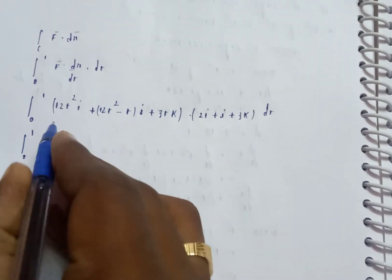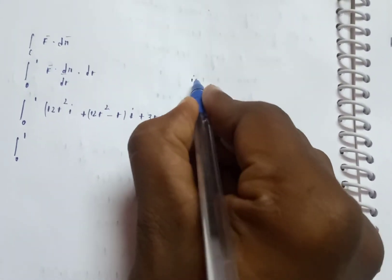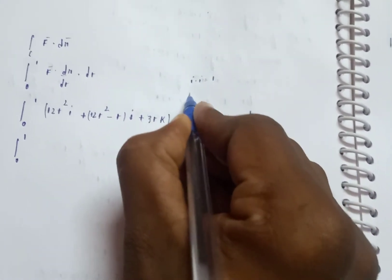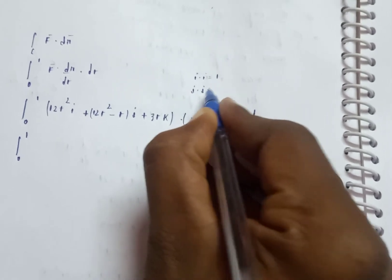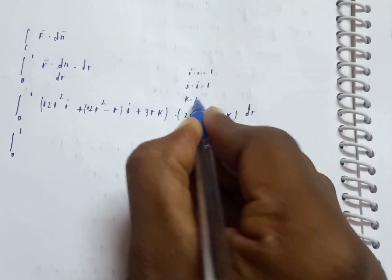Integral 0 to 1. Using i dot i equals 1, j dot j equals 1, k dot k equals 1, and i dot j, j dot k are all zero.